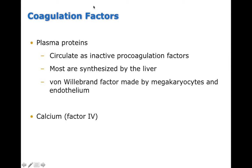Coagulation factors are chemicals that play a role in the coagulation cascade. These plasma proteins circulate as inactive pro-coagulation factors, and most are synthesized by the liver. Von Willebrand factor is made by megakaryocytes and the endothelium itself. Calcium is considered factor 4 — even though it's an atom, it's one of the factors in the clotting cascade.